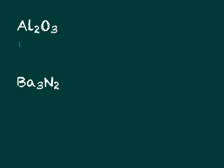We know that aluminum has a plus three charge, and oxygen has a minus two charge, based on their locations on the periodic table.